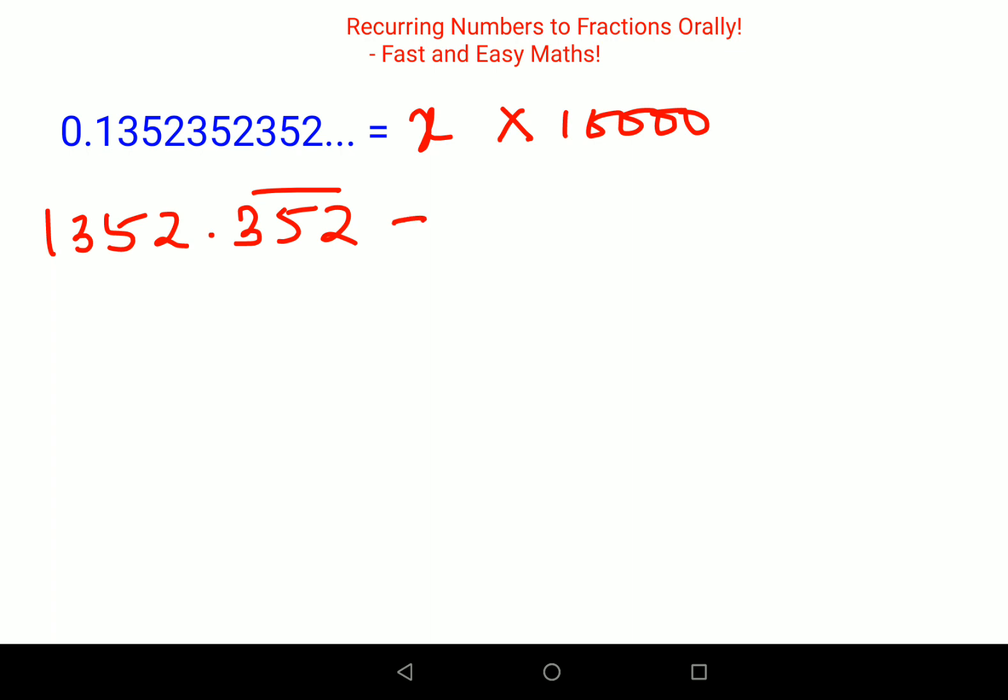This is coming out to be 10,000x. Now again we need to subtract the recurring part in such a way that the recurring part gets cancelled. In this case, I will multiply this x again by only 10, because if you do that, I just shift my one on this side and the rest entire recurring part remains as it is after the decimal point.